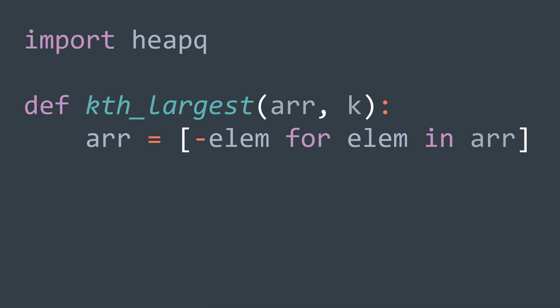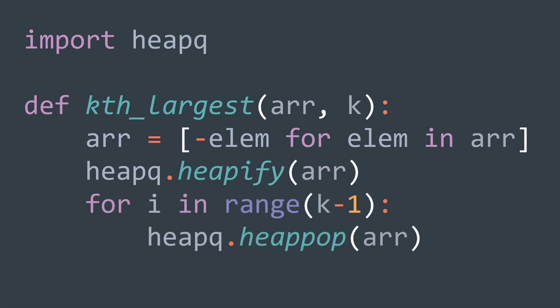So, we start by replacing arr by minus elem for each element in arr. After doing so, we heapify arr to make it respect the heap property, and now we're ready to start extracting. We extract from it k-1 times. After the loop, we extract it last time, and we return the result multiplied by minus 1 obviously, to get the original number that was in arr.